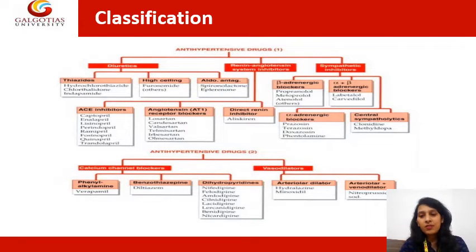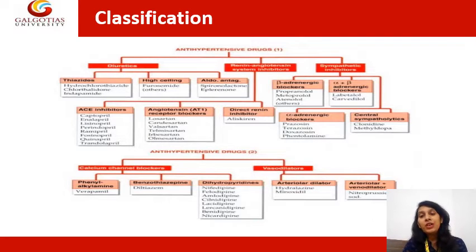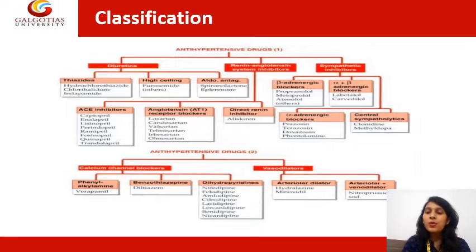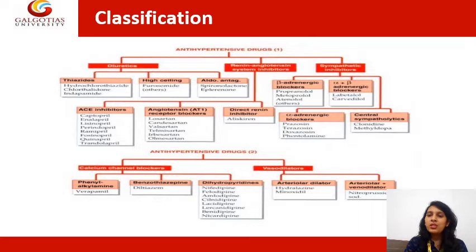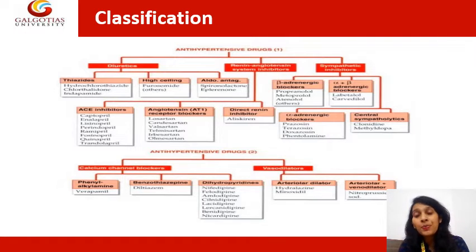These antihypertensive drugs act by inhibiting or stopping the stimulation of the sympathetic nervous system. This drug is also known as a sympatholytic drug — it lyses or breaks down the sympathetic nervous system activity — and is also known as adrenergic blockers.